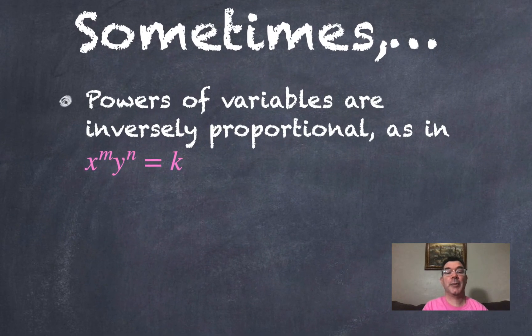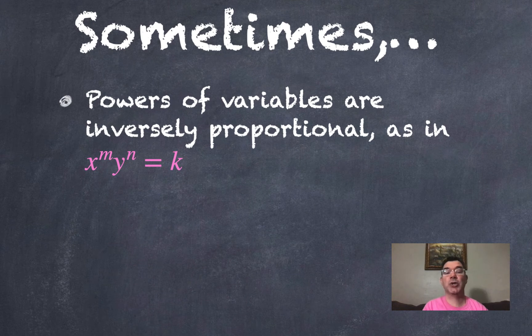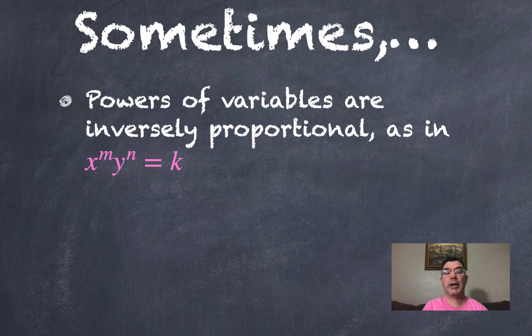Sometimes there are powers of variables and those are inversely proportional. So x could be raised to an exponent, y could be raised to a different exponent, and when you multiply those you always get the same constant k, and we call that k our constant of proportionality.